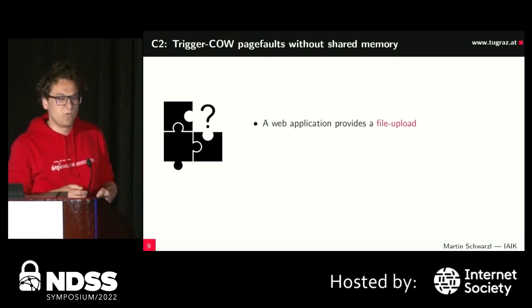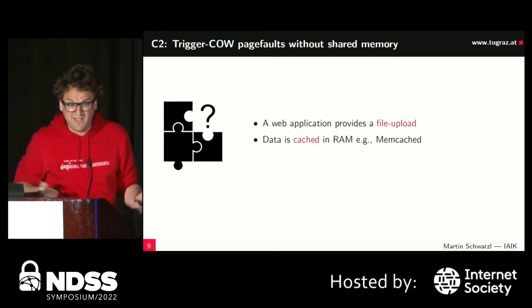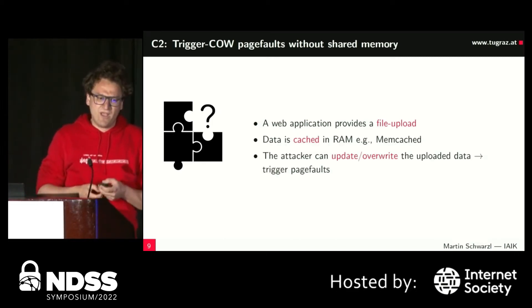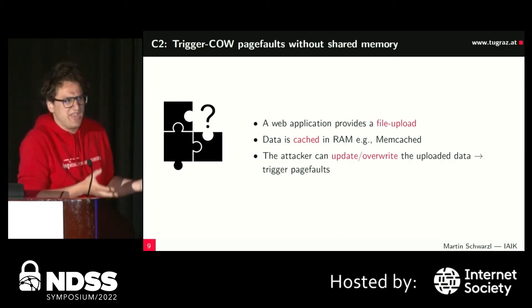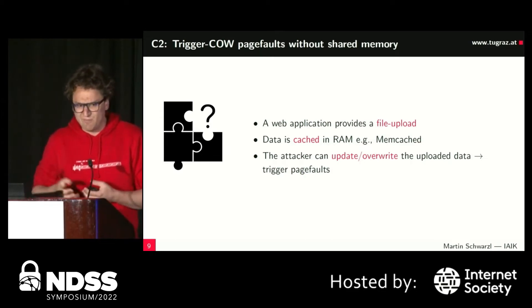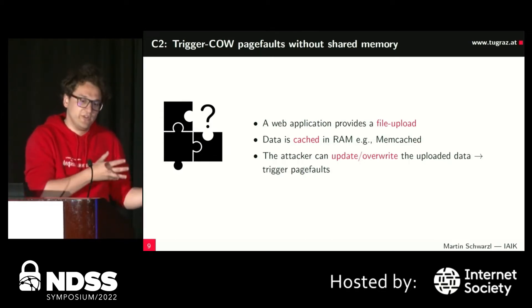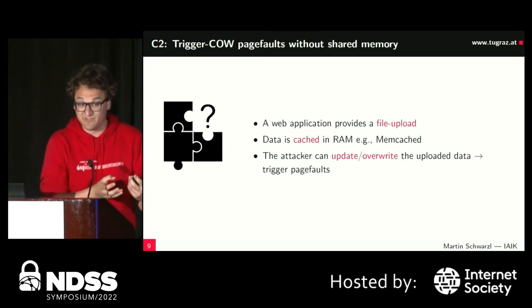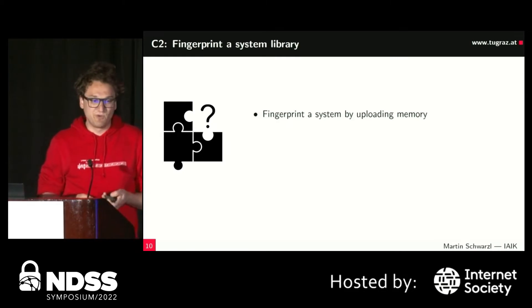For challenge two, we considered an interface that provides a file upload where data is cached in RAM. The attacker makes another API call to override, update, or release data. With this, we can solve challenge two — it allows us to trigger copy-on-write page faults remotely.